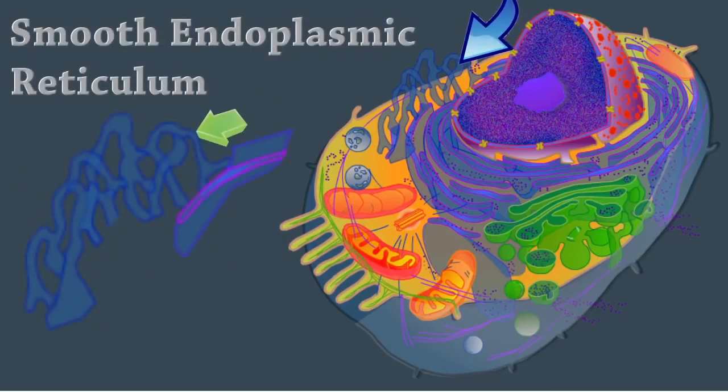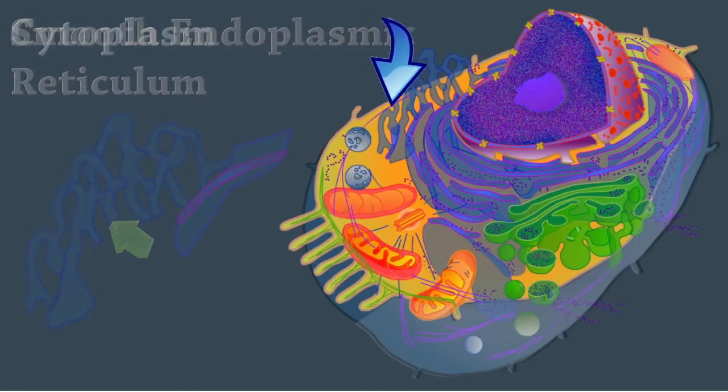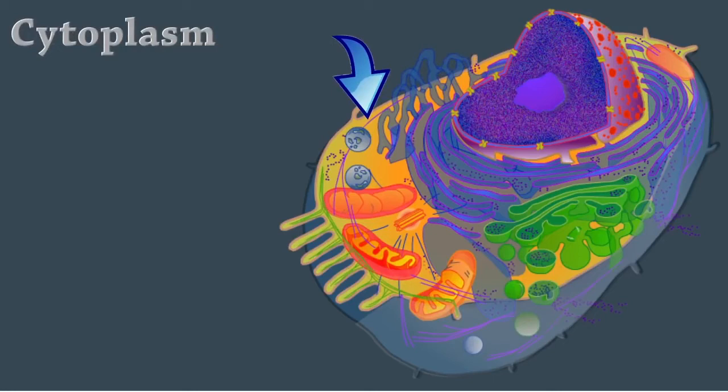The smooth endoplasmic reticulum is a membranous system of sacs and tubules that plays a part in several metabolic processes. It's free of ribosomes and synthesizes steroids, metabolizes lipids, and detoxifies drugs. In addition to organelles, the cytoplasm also contains other cellular structures.